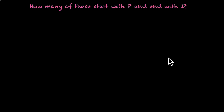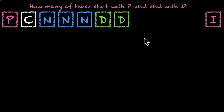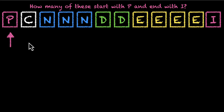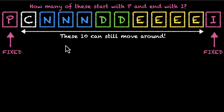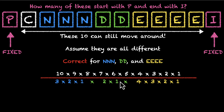Next: in how many arrangements do the words start with P and end with I? There is a constraint on both P and I — P must be first and I must be last. We fix these two and only worry about the remaining 10 letters. Assuming they are all different, we have 10! ways. We then correct for three N's, two D's, and four E's. Simplifying, we get 12,600 ways. So from 16 lakhs we're down to about 12,000.